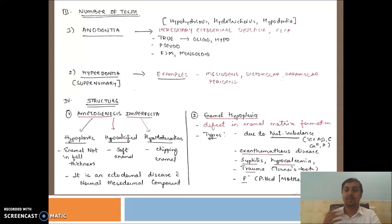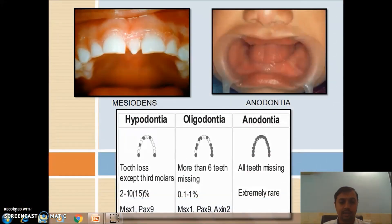Now hyperdontia, that is supernumerary. The examples are mesiodens, distomolar, paramolar, and the peridens. Let's see the clinical picture of hypodontia and hyperdontia.